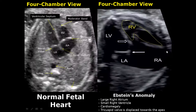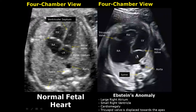In Ebstein's anomaly, there is normally a large right atrium but a small right ventricle, and there will be cardiomegaly. The tricuspid valve will be displaced towards the apex because of the enlarged right atrium. Here is another case of Ebstein's anomaly showing a large right atrium, a small right ventricle, and the displacement of the tricuspid valve towards the apex.